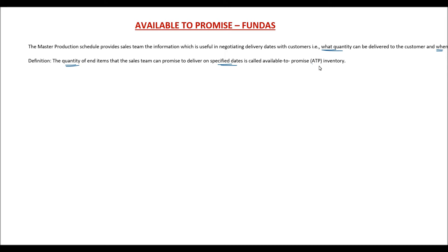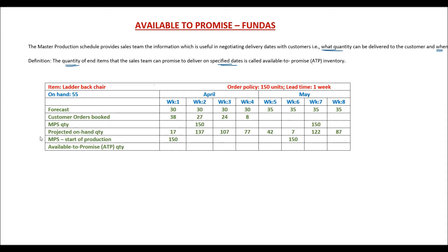Let us look at the table used in earlier videos to calculate the master production schedule and understand this concept in more detail. This table has the forecast for 8 weeks, customer orders booked, the MPS quantity to be received in week 2 and week 7, the projected on-hand quantity, and when MPS started manufacturing based on lead time. Assume that week 1 is the current week. The procedure for calculating ATP information is slightly different for the first week — the current week — than for the other weeks.